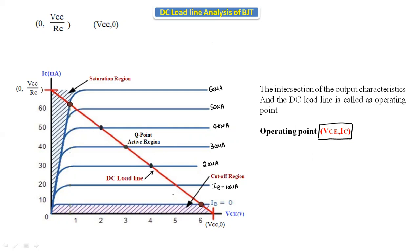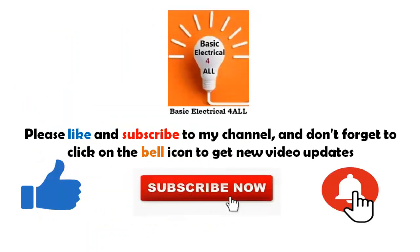By using the DC load line, we can determine whether the transistor is in a stable region or not. This point is also called the Q-point or operating point. In the active region, the transistor should always operate at the middle of the active region. Whether it is operating in the middle or not can be determined using the stability factor, which we will discuss in the next class.